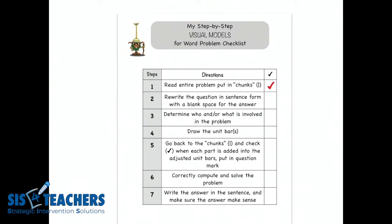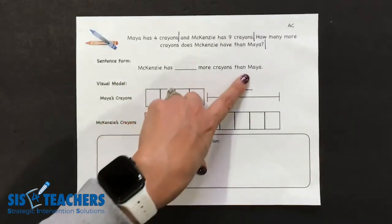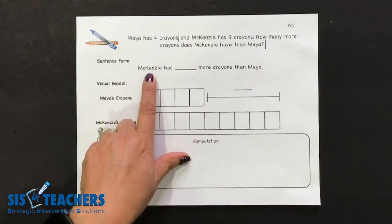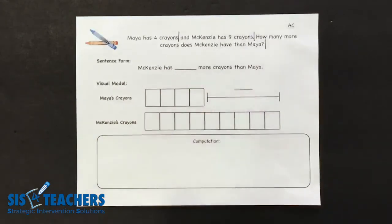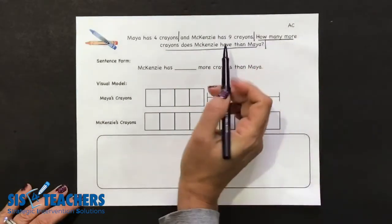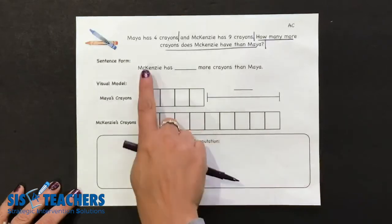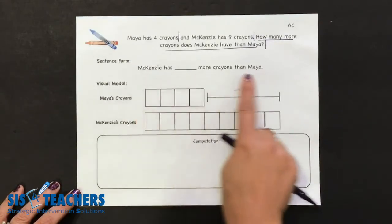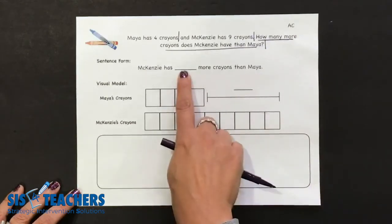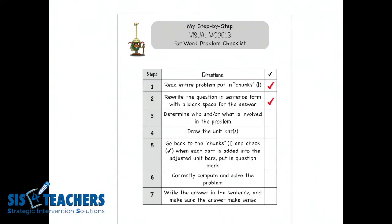Step two says to rewrite the question in sentence form with a blank space for the answer. If we go back to the journal, we have this really scaffolded for the beginning of the year where it says Mackenzie has blank more crayons than Maya. The idea of the sentence form is to really ask students what are we solving for? We're not solving until step six and we're only on step two. This sentence form brings clarity to exactly what we're solving for, and we leave the blank space so kids know the answer has to go there at the end.